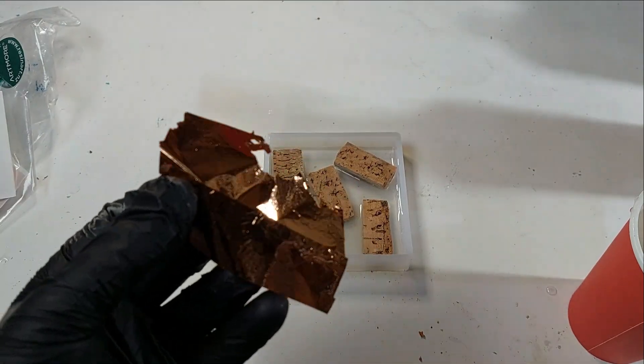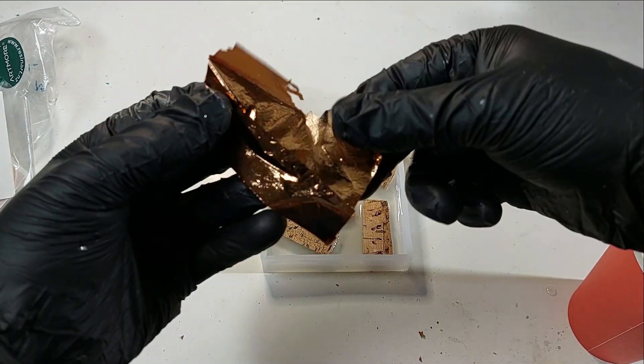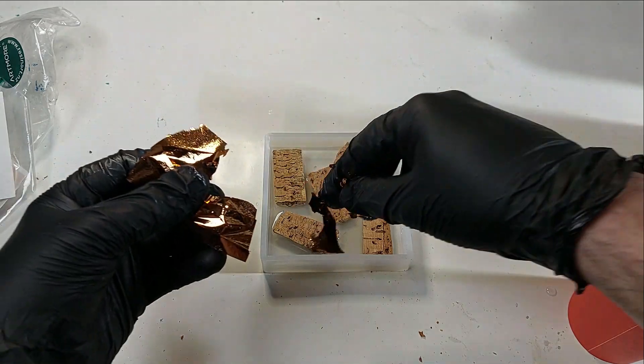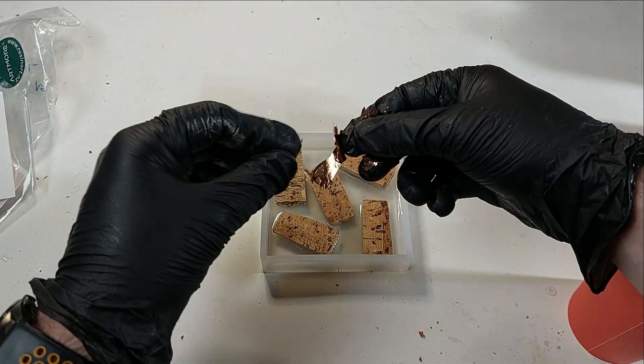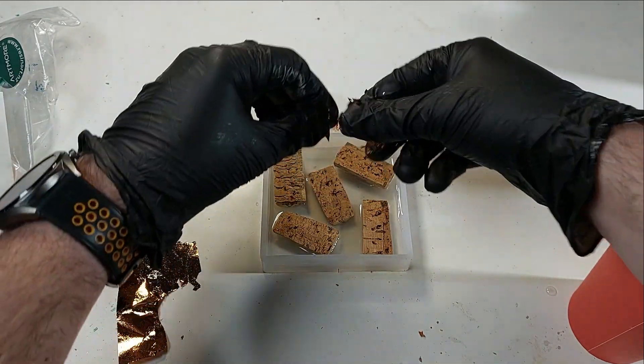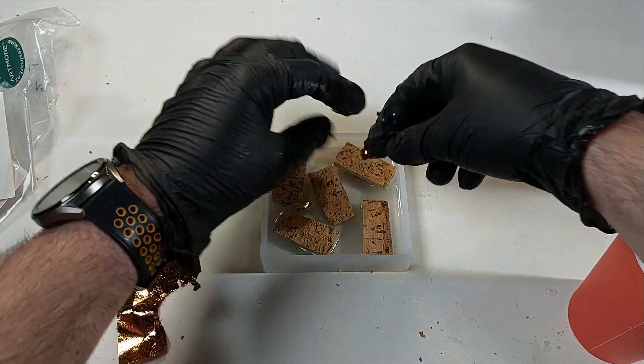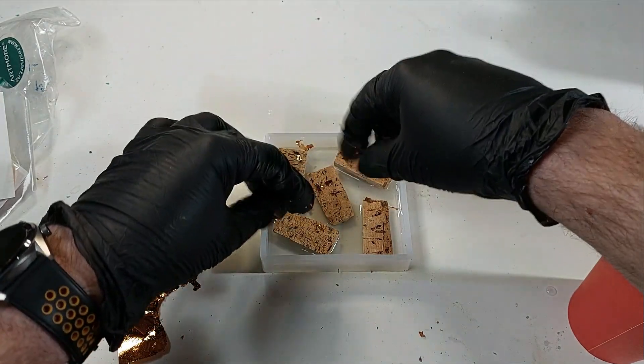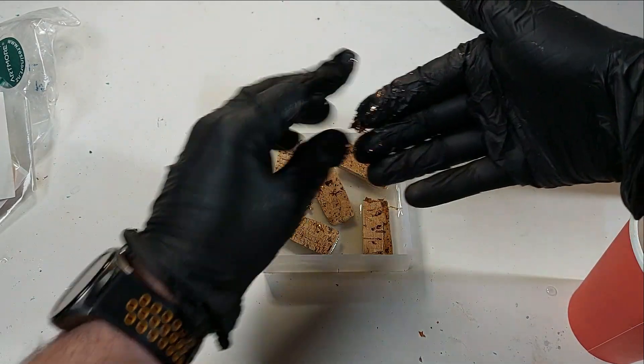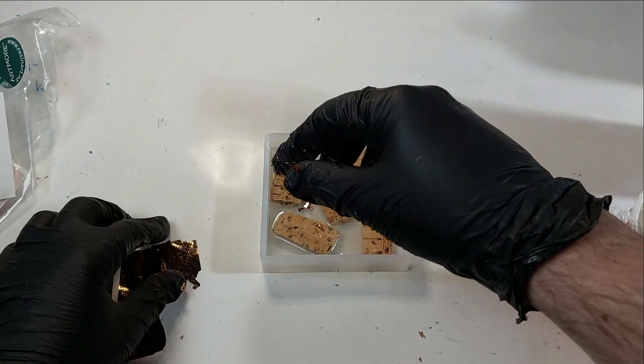All right so let's put a layer of clear down. Got a little bit of this bronze or rose gold foil, try to sprinkle some of this. This foil was not the easiest to work with especially when you had some unset resin on your hands as well.